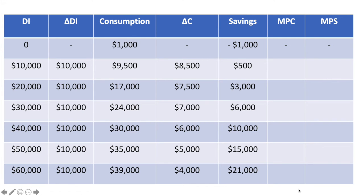I find it helpful to include information on the change in consumption. This is calculated by subtracting the previous amount of consumption from the current level of consumption. At a disposable income of $20,000 the individual consumes $17,000 total; at the previous level of $10,000 they were consuming $9,500. This represents a change in consumption of $7,500. If you follow this same approach throughout the column, your answer should match what I have here.